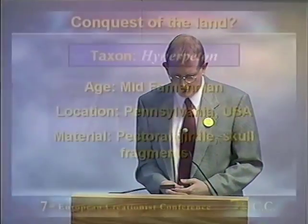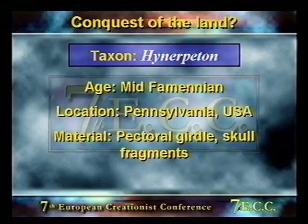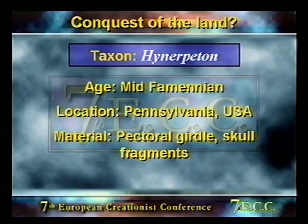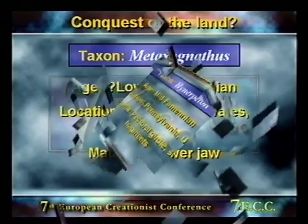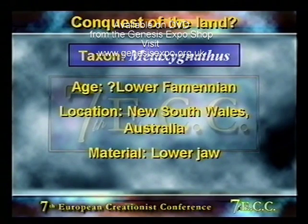Hynerpeton is from the mid-Famennian of Pennsylvania in America, described in 1994. It consists of pectoral girdle and skull fragments. Metaxygnathus is a single lower jaw thought to be from Lower Famennian sediments in Australia.